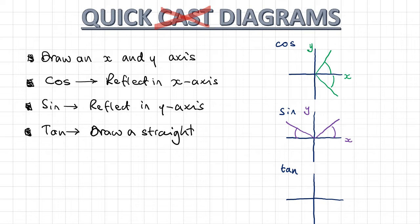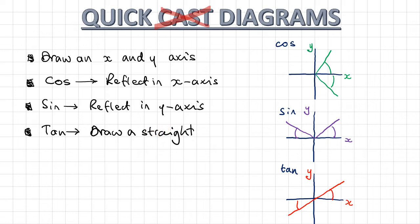And if you're solving a trig equation for tan, you find your first solution on the calculator. Then once you've found it, you make a straight line — these two angles are going to be the same. To remember which goes with which: C comes before S in the alphabet, X comes before Y, so cos goes with the x axis, sine goes with the y axis. And tan — if you want to tan, you lie down straight in a straight line.